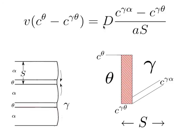We can account for the surface energy cost created by the formation of the cementite-ferrite layers. During pearlite growth, these interfaces have a cost: if the interlamellar spacing is very small, there is a huge amount of interface per unit volume. We need to work out how the amount of interface per unit volume varies as a function of interlamellar spacing.